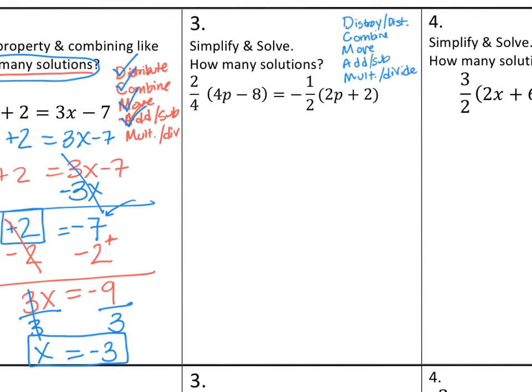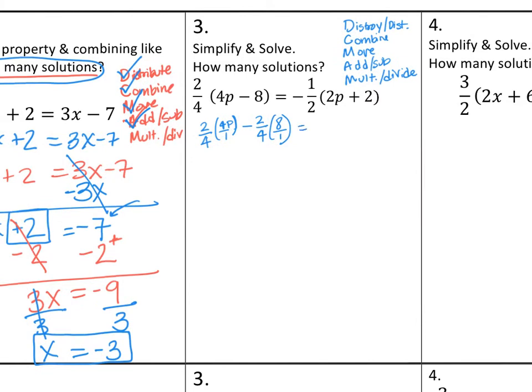Right here I'm going to destroy and distribute the fractions. It already has the fractions outside of it. Fortunately for us, it already has a fraction on the right-hand side and a fraction on the left-hand side, so go ahead and solve it. So we have 2 fourths times 4p, and you can even put a 1 under it because you already know you're going to need it, minus 2 fourths times 8 over 1. That's going to equal negative 1 half, and put the negative on the 1 so you don't forget it, 2p over 1, plus negative 1 half times 2 over 1.